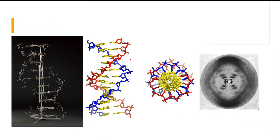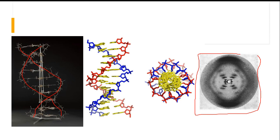The model of the DNA double helix was proposed by Watson and Crick. In 1952, Watson and Crick proposed this double helix structure of DNA based upon a photograph. This photograph is known as Photograph 51 — the 51st photograph of X-ray crystallography.